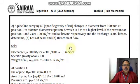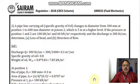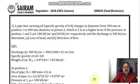Friends, another problem on the continuity equation. A pipeline carrying oil of specific gravity 0.8 changes in diameter from 300 millimeter at position 1 to 600 millimeter diameter at position 2, which is 5 meters at a higher level. If the pressure at positions 1 and 2 are 100 kilonewton per meter square and 60 kilonewton per meter square respectively, and the discharge is 300 liters per second, determine the loss of head and direction of flow.